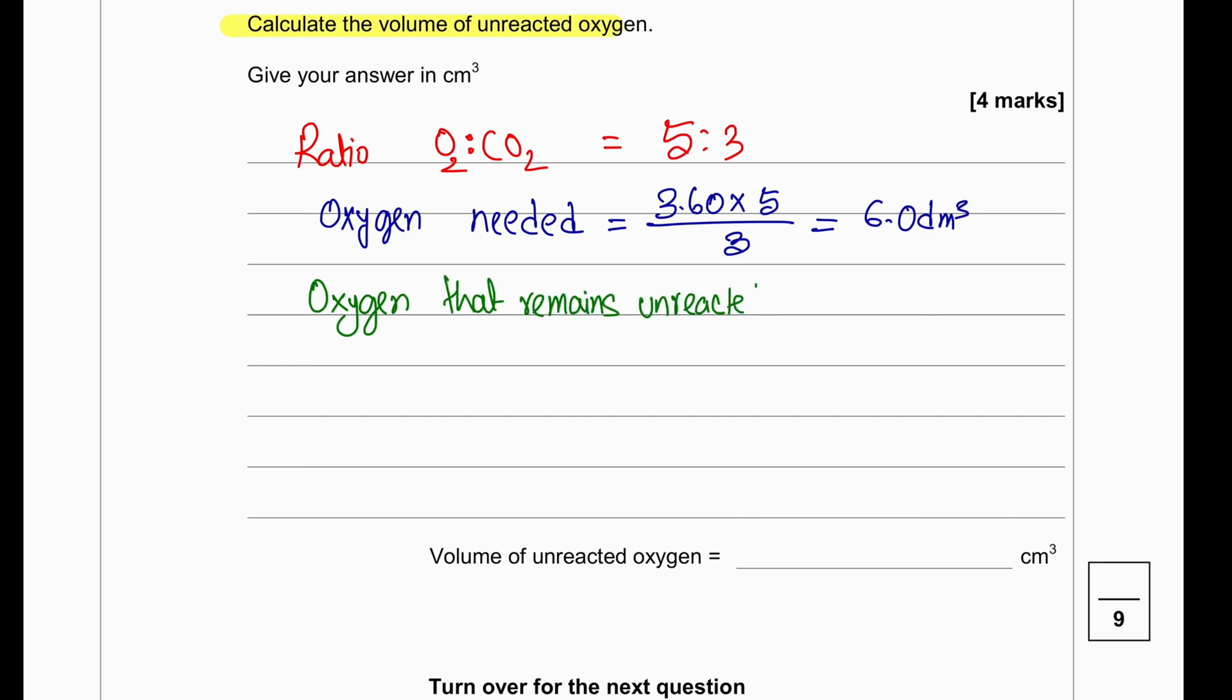The unreacted oxygen will be 7.25 dm³ minus 6 dm³ and then we will get 1.25 dm³ as unreacted oxygen. The oxygen unreacted which is we get in 1.25 dm³ needs to be converted into cm³. So we will multiply it with 1000 and the answer will be 1250 cm³.